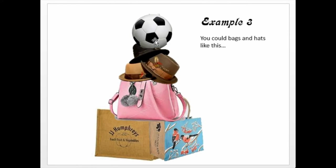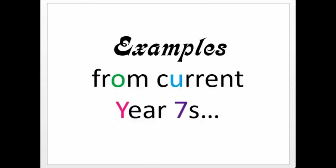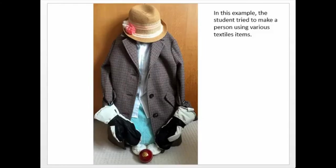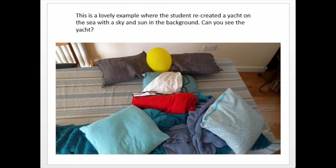My current Year 7 students did some great examples. In this one, the student tried to make a person using various textile items — you can see what look like winter gloves, a jacket, and a hat, and she's made it look really realistic, as if it's a person. In this one, they've recreated a yacht with the sea and sky in the background. They've used a drawstring bag, rolled up pillows for waves, and then in the background there's a sun and a sky — just brilliant.